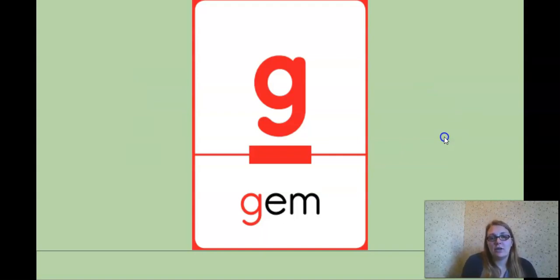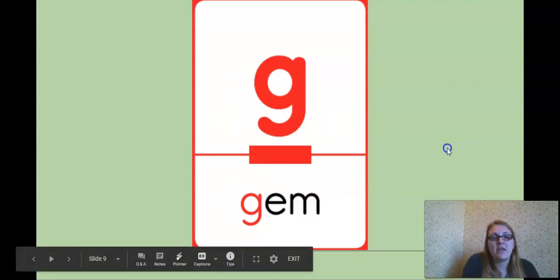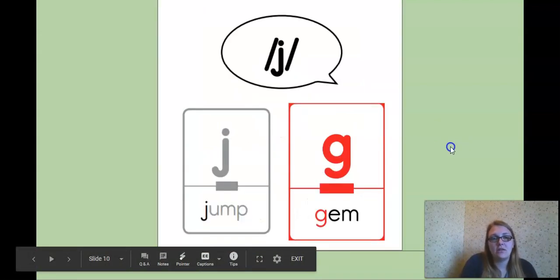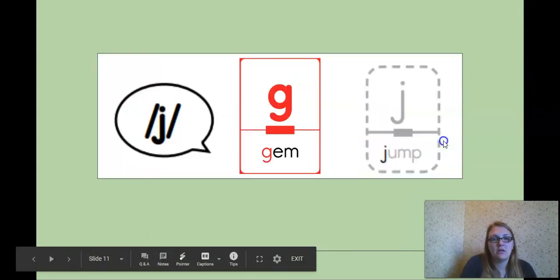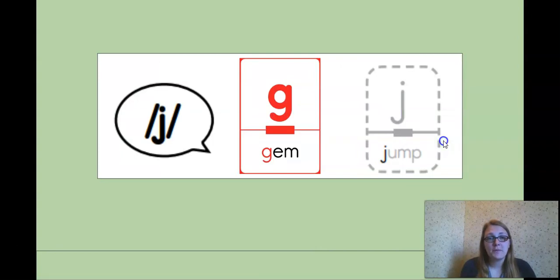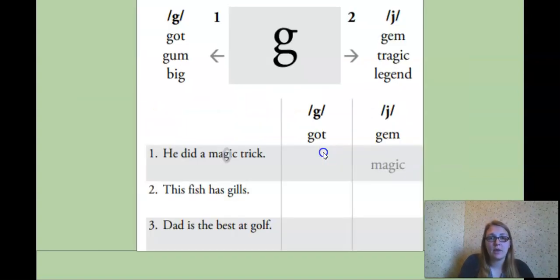So, for the juh sound, sometimes it will be spelled with a G. Okay. Sometimes that will be spelled with a G. Add that to your individual code chart with red for the juh sound. The juh sound is sometimes spelled with the letter G. Okay.